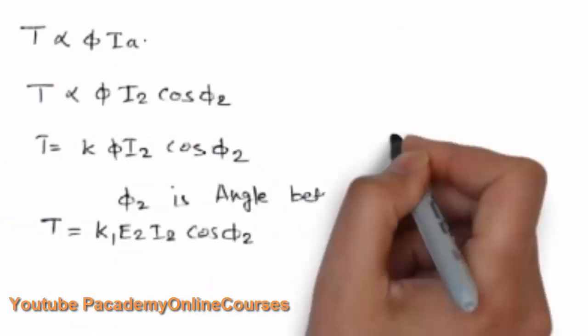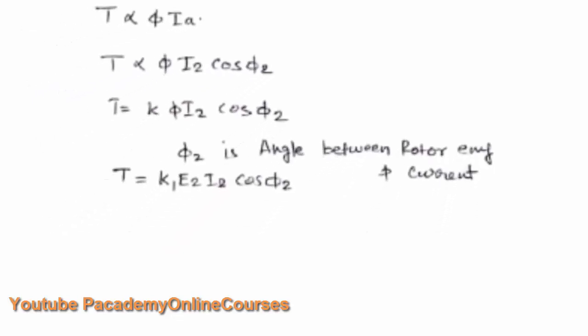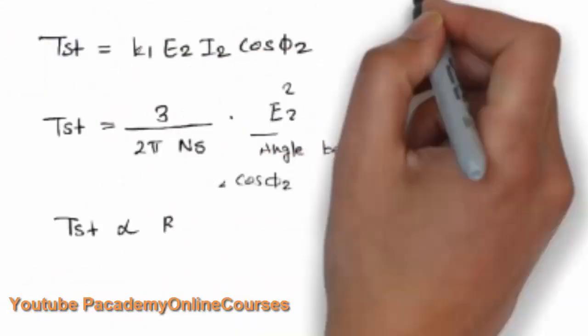When considering the torque of an induction machine, the power factor must be included. The torque is directly proportional to the flux, the rotor current I2, and the rotor power factor cos Phi 2. Phi 2 is the angle between the rotor EMF and the rotor current, and this angle represents the power factor of the rotor circuit.